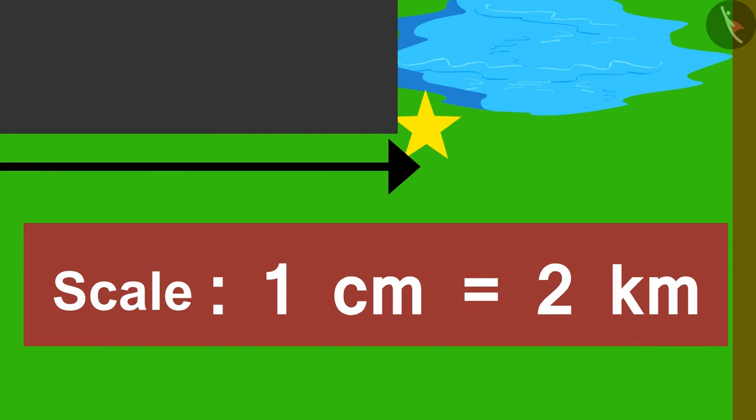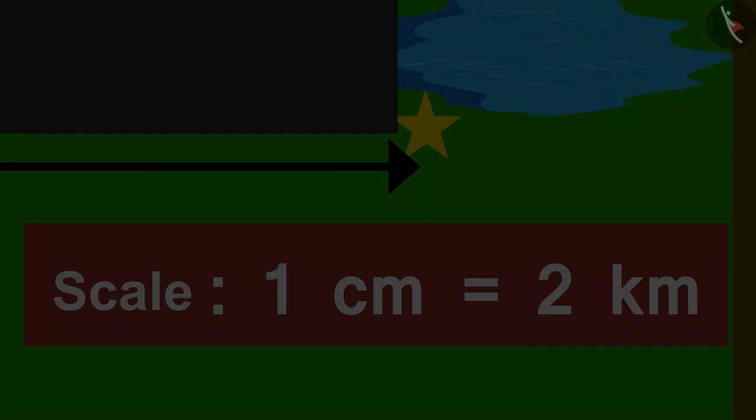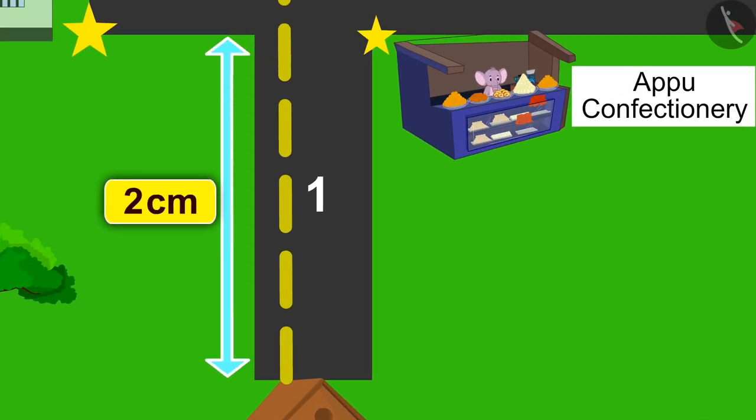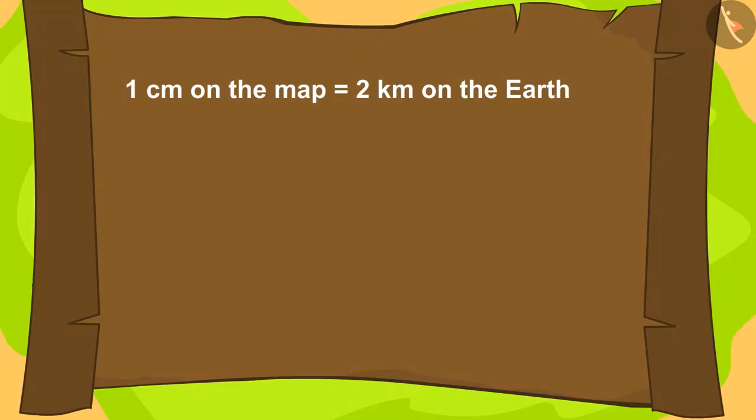Do you know how we can use this scale? The distance of road number 1 on the map given by Uncle is 2 cm. How many km on earth is 1 cm according to scale written on the map? 2 km.